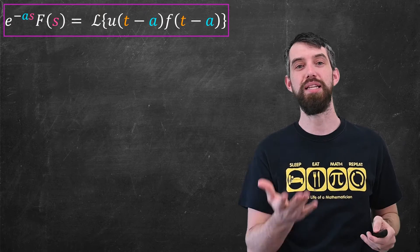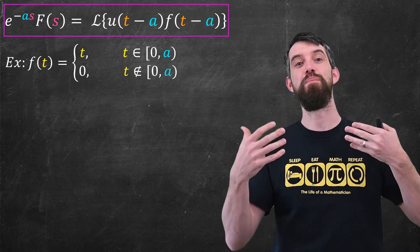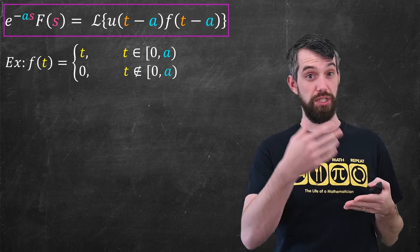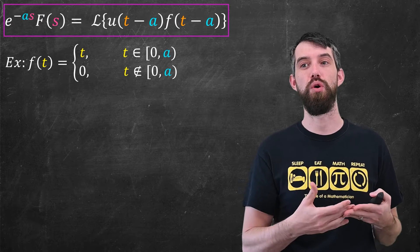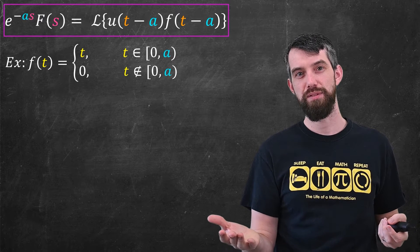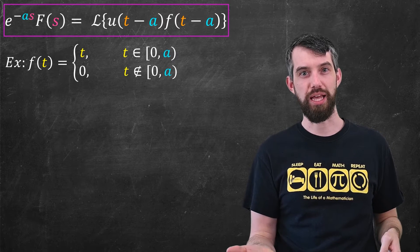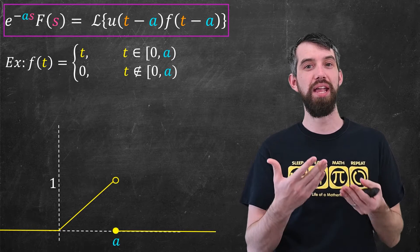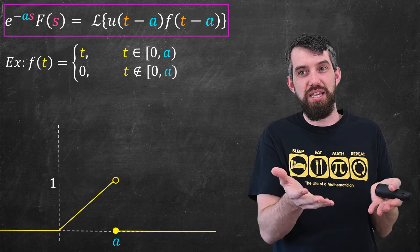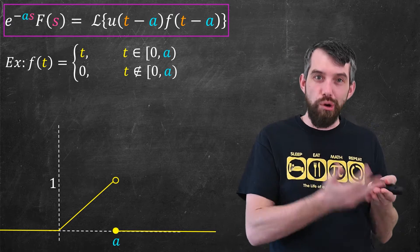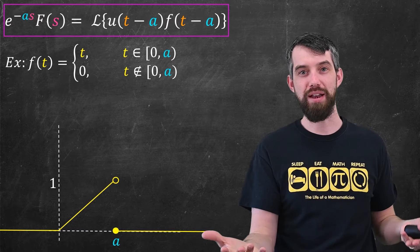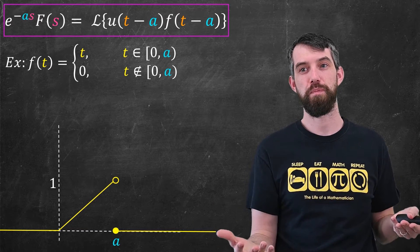Alright, so let's see an example of this. I want to begin with some piecewise defined function. This function f of t is just t when we're in the interval zero up to a, and then it's zero everywhere else. Pictorially, it looks like the line f of t equal to t, but only in the domain [0, a). Outside of that, it's just the function zero.